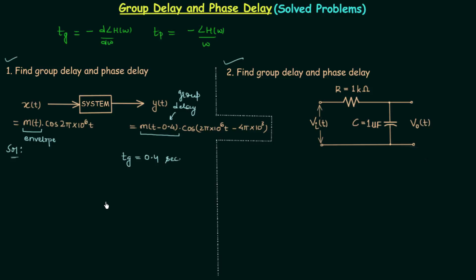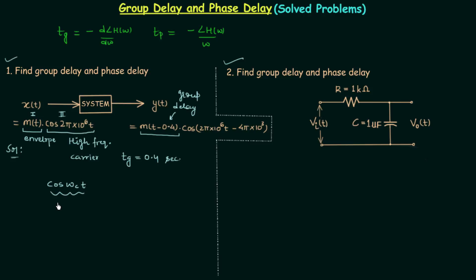Now we will focus on the high frequency carrier part of the input. The input x(t) has two different parts: the first part is the envelope, and the second part is cos(2π × 10⁶ t), which is known as the high frequency carrier or single frequency signal. In the last lecture we saw the high frequency carrier was cos(ω_c t). Comparing, we find ω_c is equal to 2π × 10⁶.